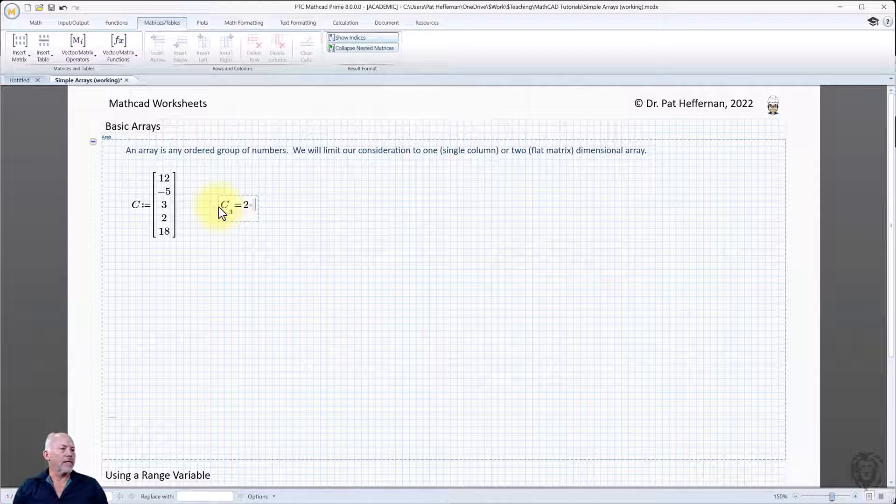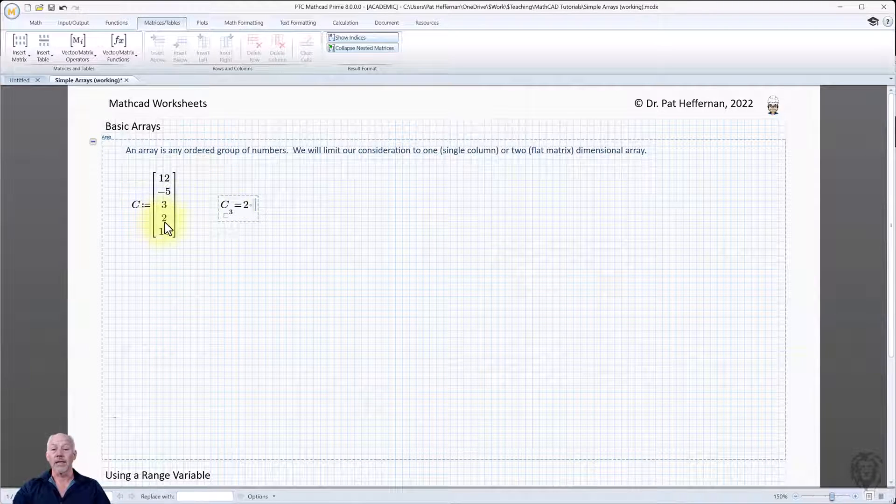Now, you may be looking at this and going, oh, I don't really understand. Why is it giving me two? Why isn't it giving me three? Well, of course, it's all based on what your origin is set at. And by default in MathCAD, the origin is set at zero. So the order or the numbering of the elements starts at zero and goes on from that. So of course, we went to three. So zero, one, two, three, that's the fourth one down. So we didn't get the third one down, we got the fourth one down.